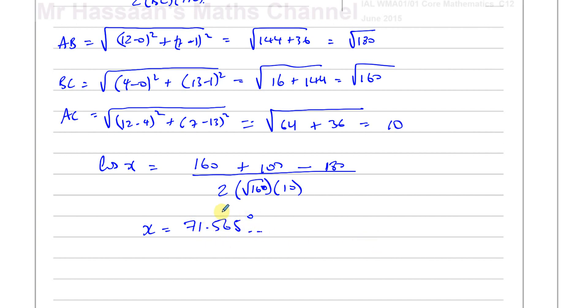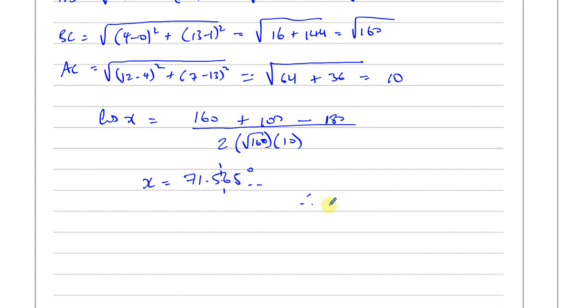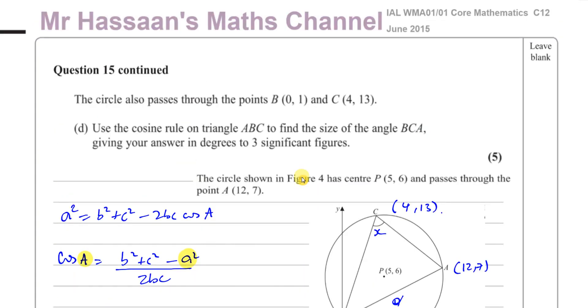Now they said to 3 significant figures, so you stop here. So we can say, therefore, the angle that we're looking for, which is angle BCA, therefore angle BCA, is equal to 71.6 degrees. And there's the answer to part D of this question.